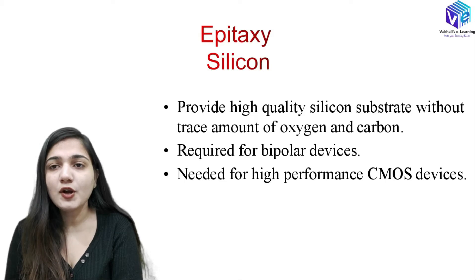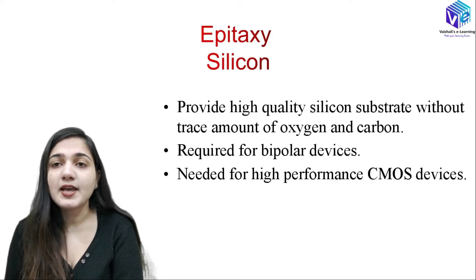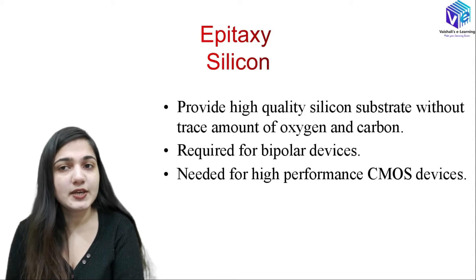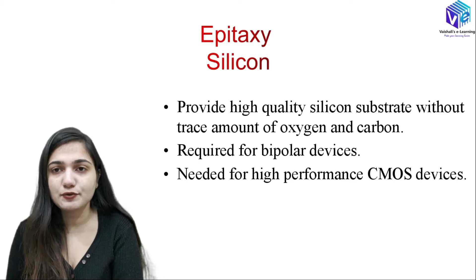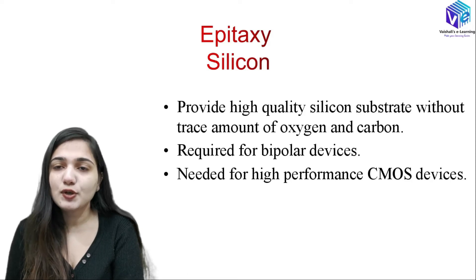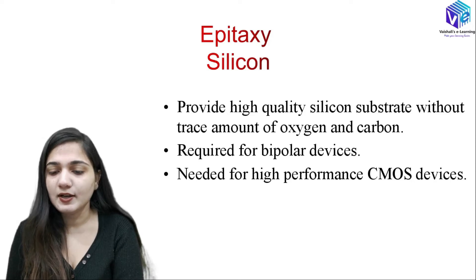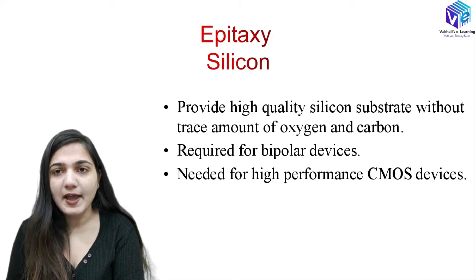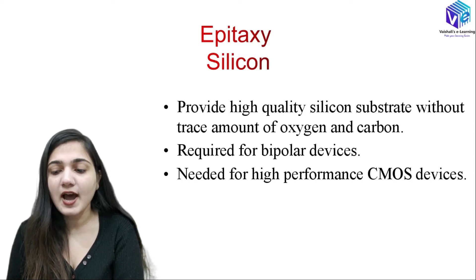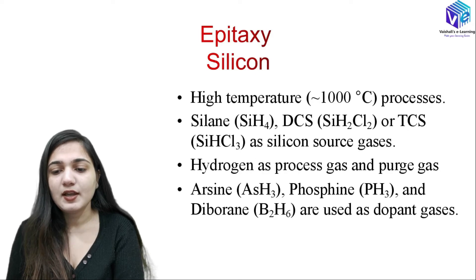Coming to epitaxy with the silicon layer — we need to make a high quality silicon substrate without trace amounts of oxygen and carbon, and for that we are making the epitaxial layer. The substrate was not having very good purity; it was having contamination with oxygen and carbon atoms. We need to avoid this, and for that we are using the epitaxial layer, which is a very pure layer. This is the benefit of having the epitaxial layer — it gives a high quality silicon layer over the silicon substrate. It is required for bipolar devices and for high performance CMOS devices as well.